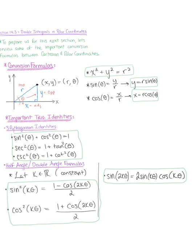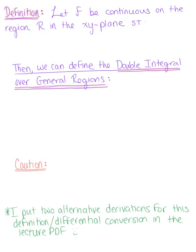So we're now ready. Let's take a look at the definition for a polar coordinate over a general region. Jumping right into the definition, we want to let f be continuous on the region r in the xy plane, such that this region r is defined as the set of all ordered pairs r theta, where our radius is greater than or equal to 0, which is greater than or equal to the function g of theta, and it's less than or equal to the function f of theta.